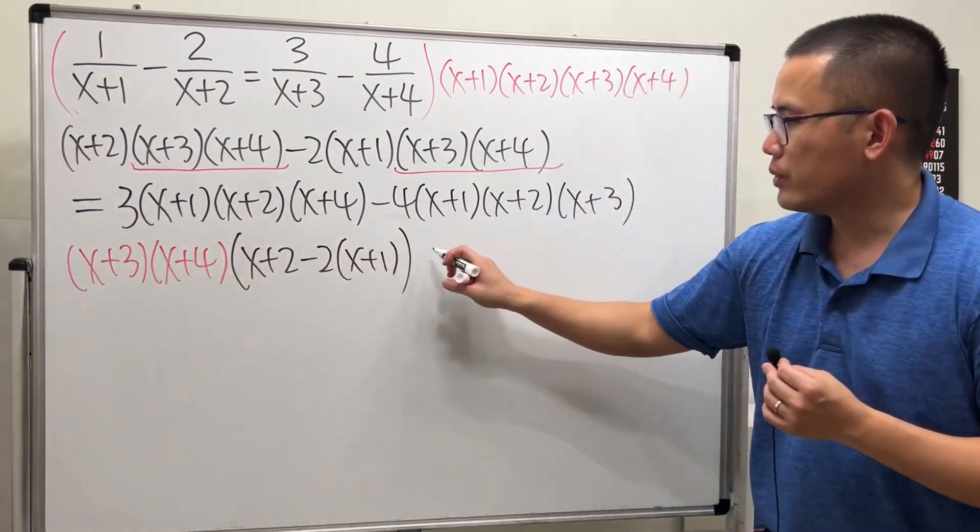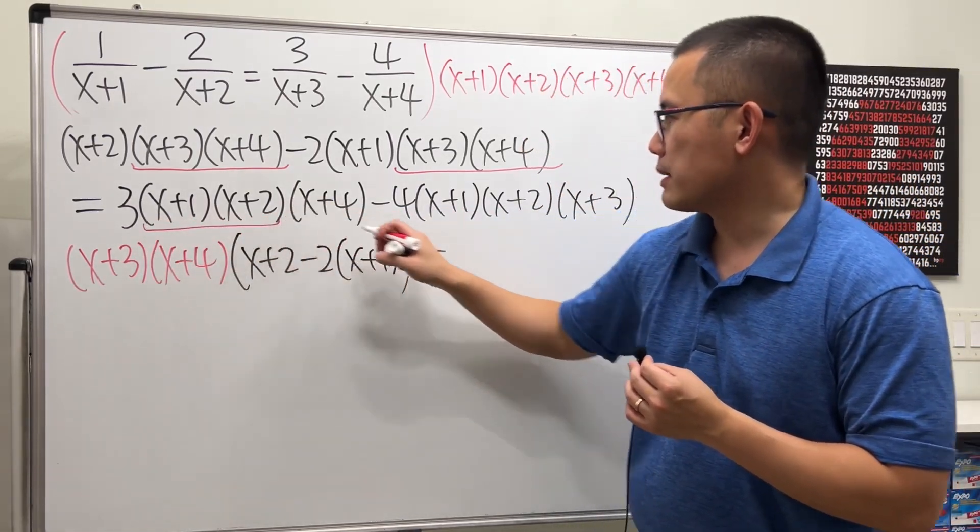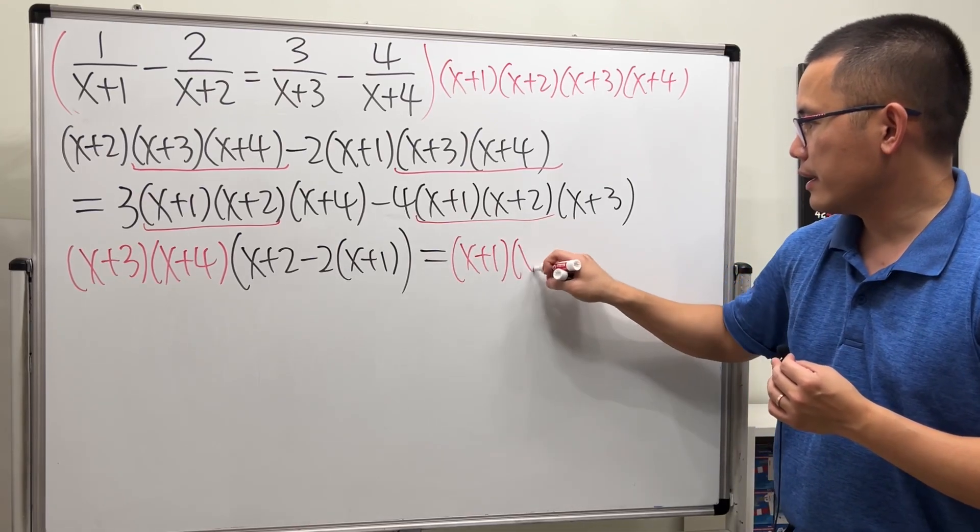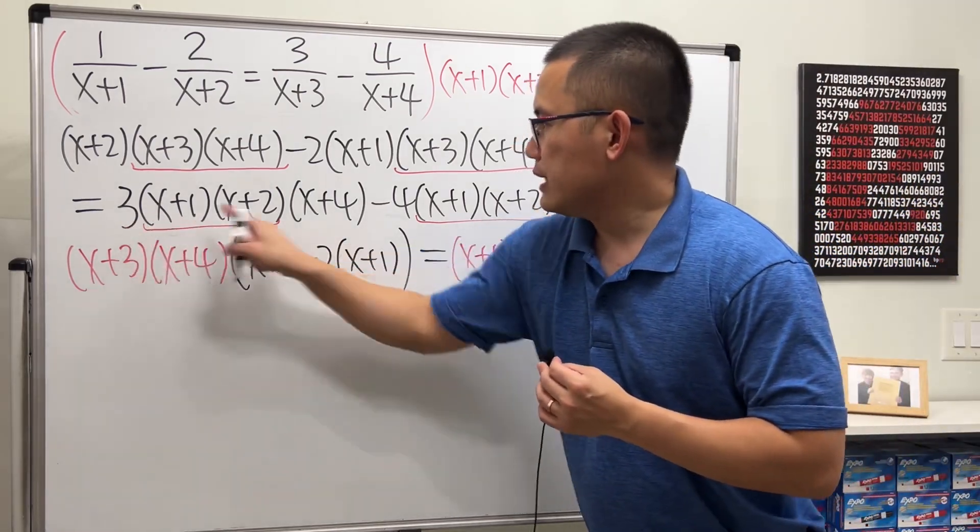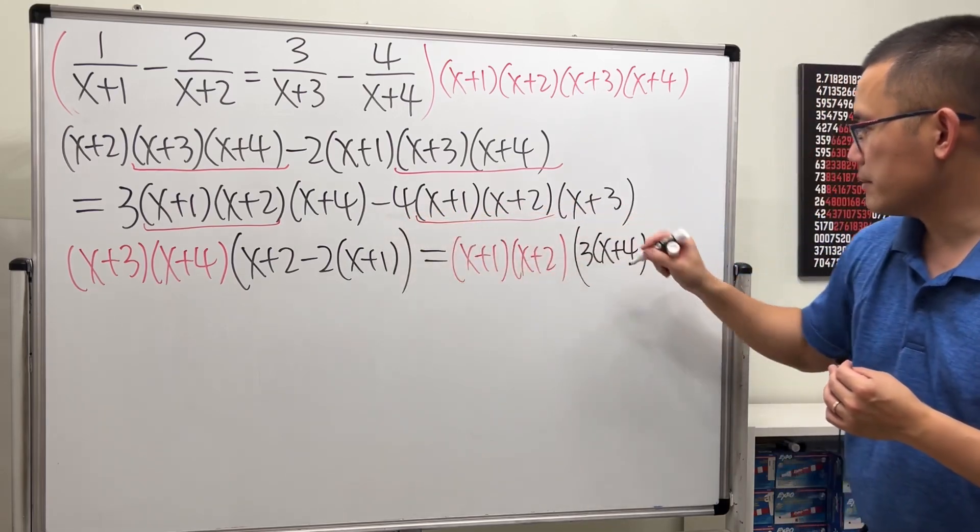That will be equal to, on the right-hand side, we can factor out x plus 1, x plus 2. So let's do the same, x plus 1, x plus 2. And then, we will have 3 times this, and minus 4 times that.